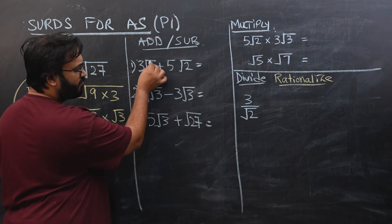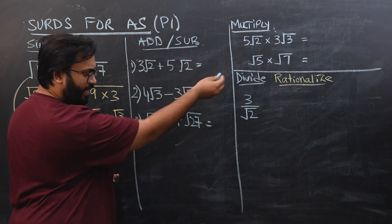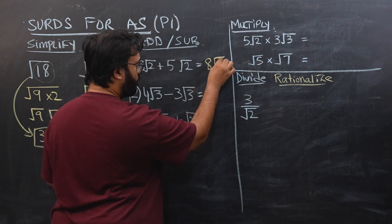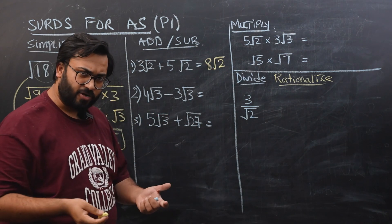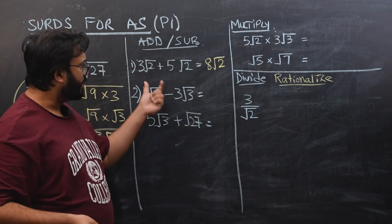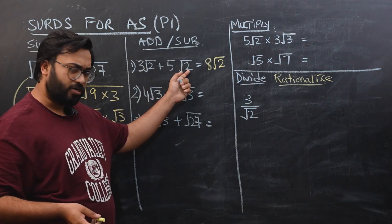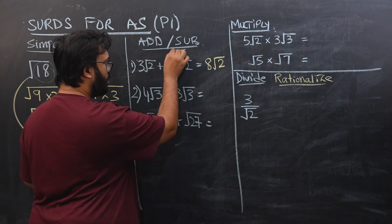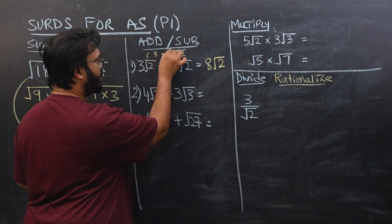The final answer would be 8 under root of 2. But you can also visualize this in another way. Both of them have this square root in common, so if I take square root 2 common, I will have 3 plus 5 over here, so it would be 8 under root 2. So it's up to you how you want to visualize this.